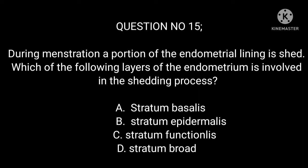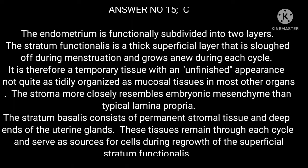Question number 15. During menstruation, a portion of the endometrial lining is shed. Which of the following layers of the endometrium is involved in the shedding process? A. Stratum basalis. B. Stratum epidermalis. C. Stratum functionalis. D. Stratum broad. Answer number 15: C. The endometrium is functionally subdivided into two layers. The stratum functionalis is a thick superficial layer that is sloughed off during menstruation and grows anew during each cycle. It is a temporary tissue. The stratum basalis consists of permanent stromal tissue and deep ends of the uterine glands, which remain through each cycle and serve as sources for cells during regrowth of the superficial stratum functionalis.